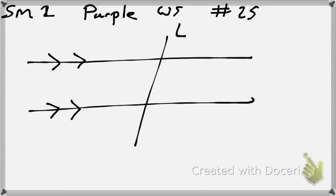The line that intersects the two lines is called a transversal, okay? Okay, so on number 25, it gives me an angle here and an angle here. What is the relationship of those two angles?